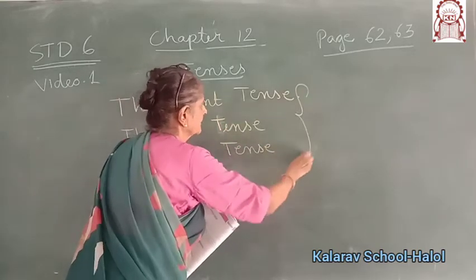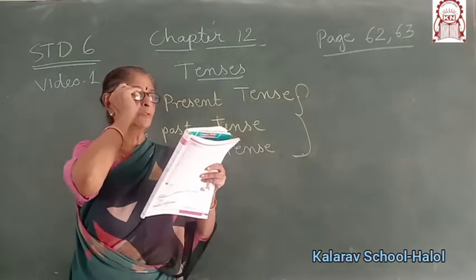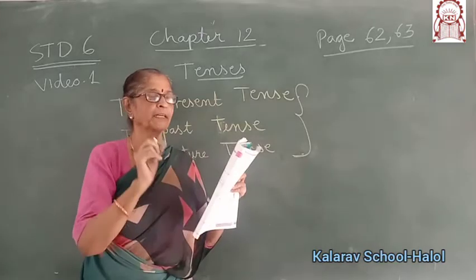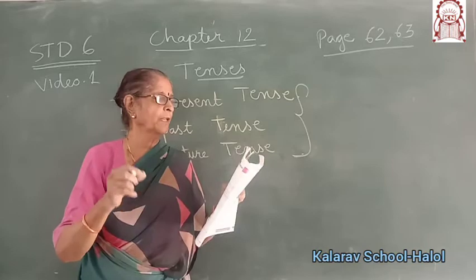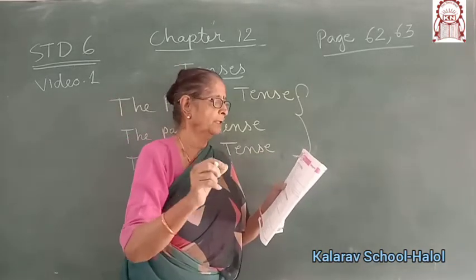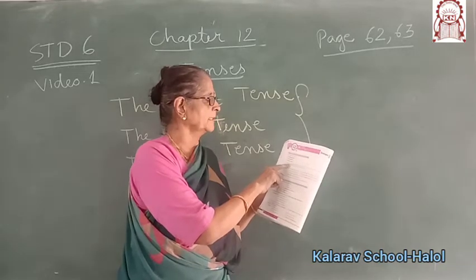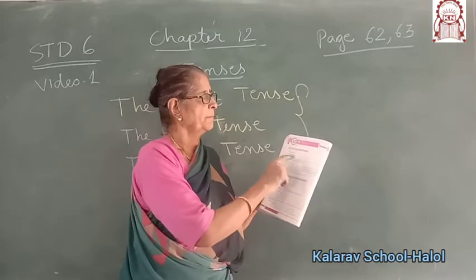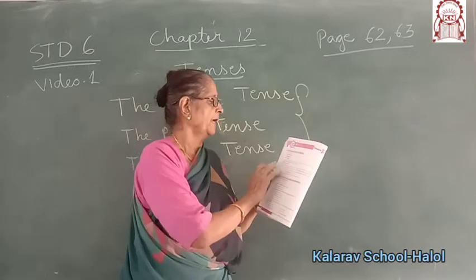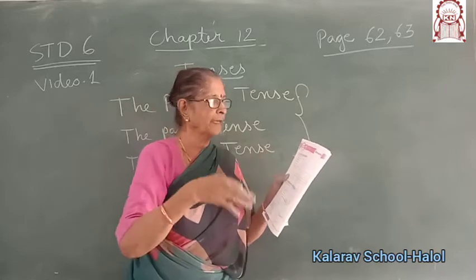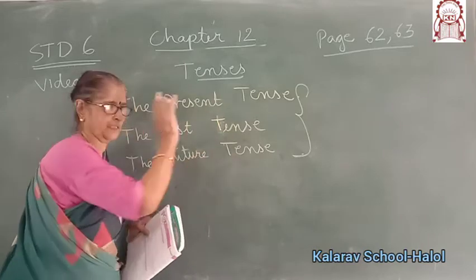These three tenses are there. Tenses are verb forms which indicate the time of an action — when we have done the action, that is known as the tense. The present tense expresses actions in the present time. Past tense expresses actions in the past time. And the actions which are likely to occur in future are known as the future tense.